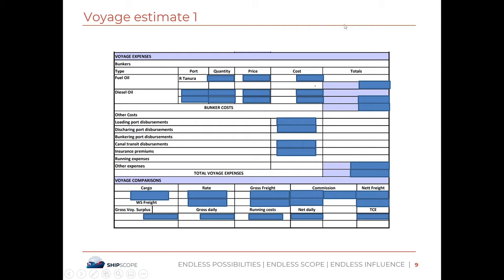Now we calculate the total bunker cost. Total fuel oil consumed is 3,678 tons multiplied by $260 per ton, giving $956,280. For diesel oil, the total cost is $49,600. Adding both figures, the final total bunker cost is $1,005,880.